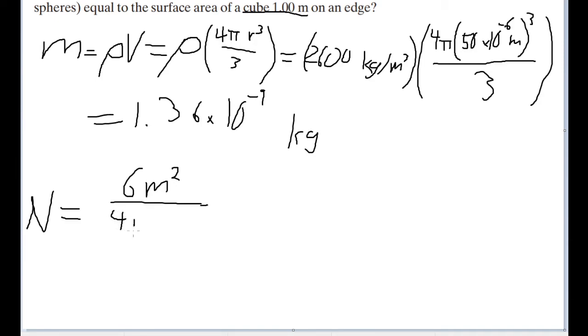So in this case, that'll be 4 pi times the radius, which is, again, 50 microns. So 50 times 10 to the negative 6 meters. And we'll square that radius. And once again, plugging this into our calculator, we find that the number of grains this would get us is 1.91 times 10 to the eighth grains.